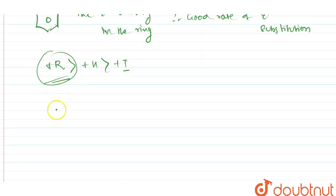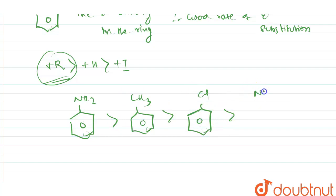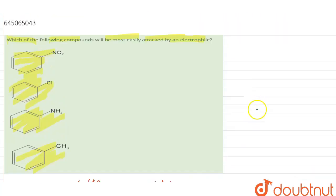So the rate of electrophilic substitution reaction in order would be: first aniline, then toluene, then chlorobenzene, and finally nitrobenzene. Therefore, the compound most easily attacked by an electrophile is aniline.